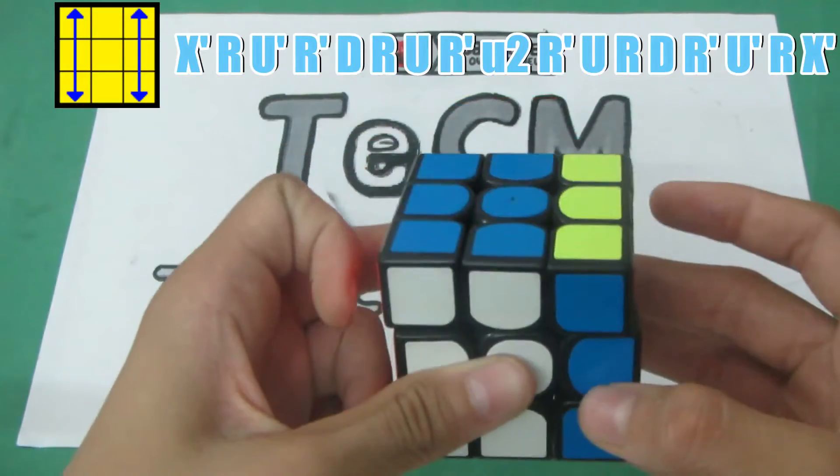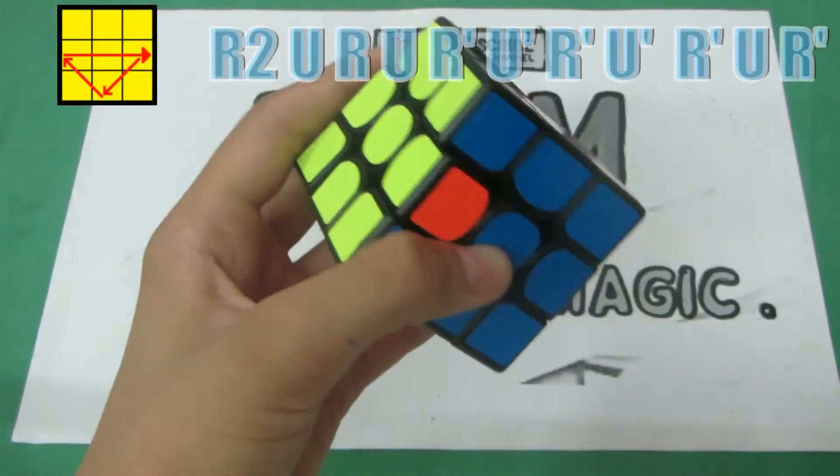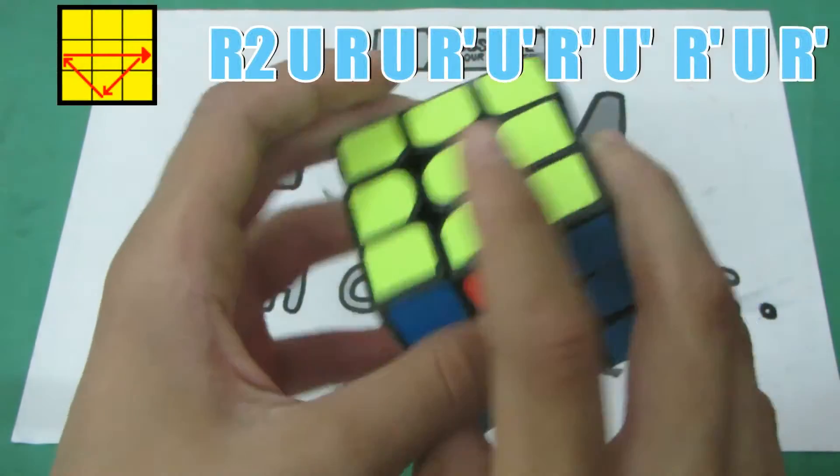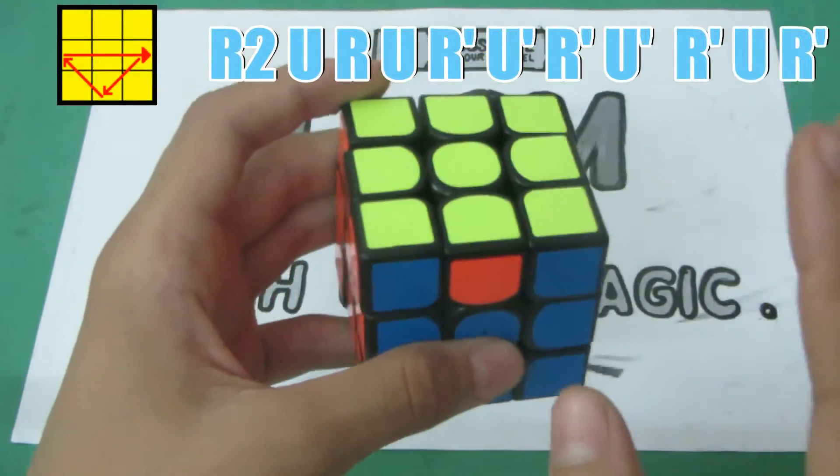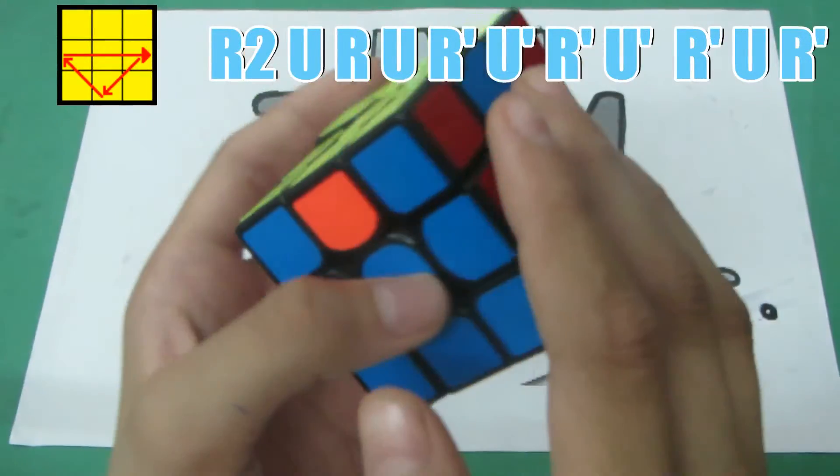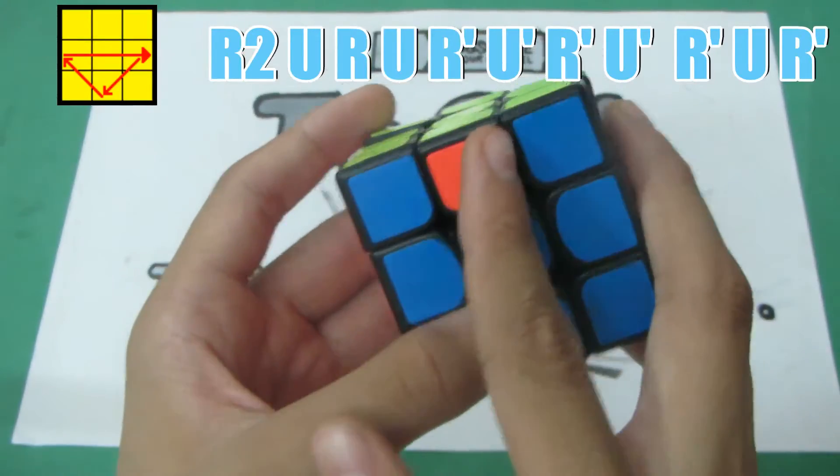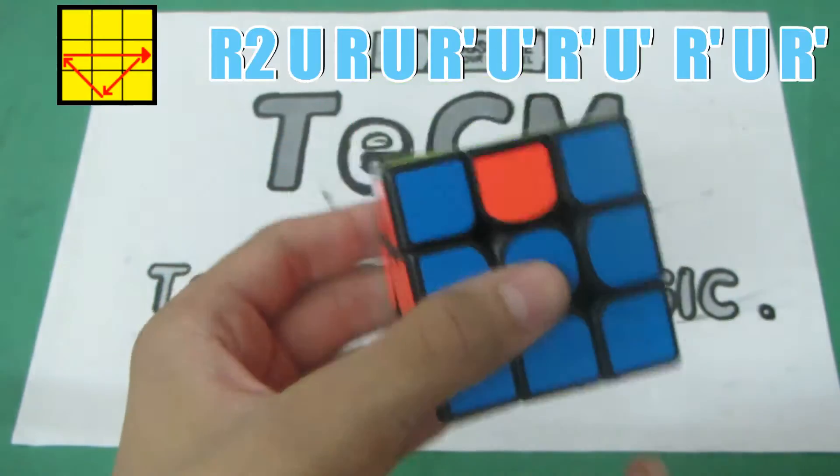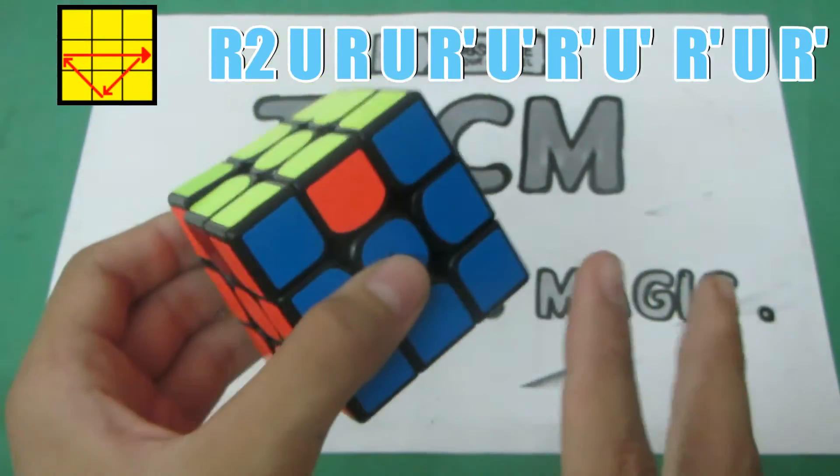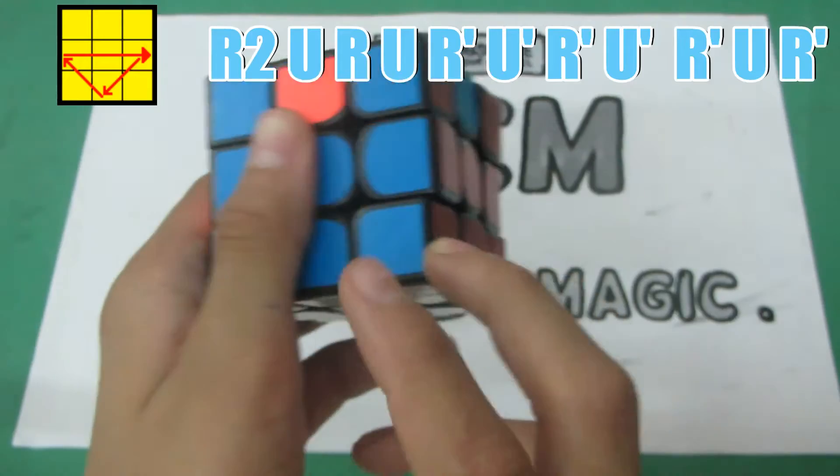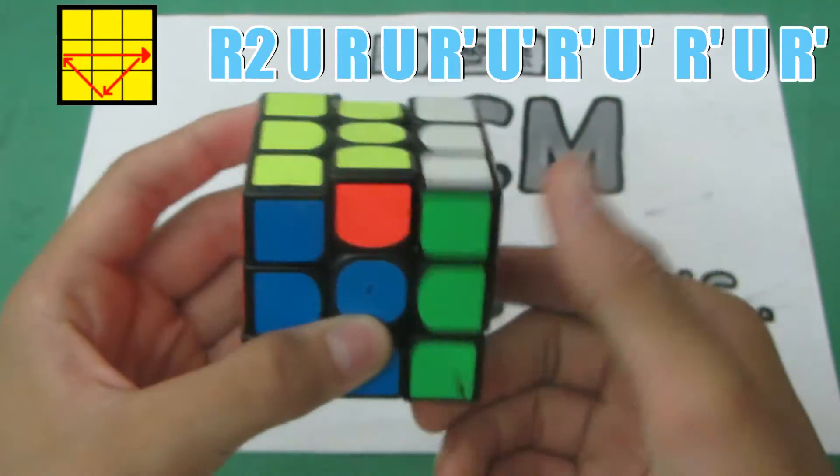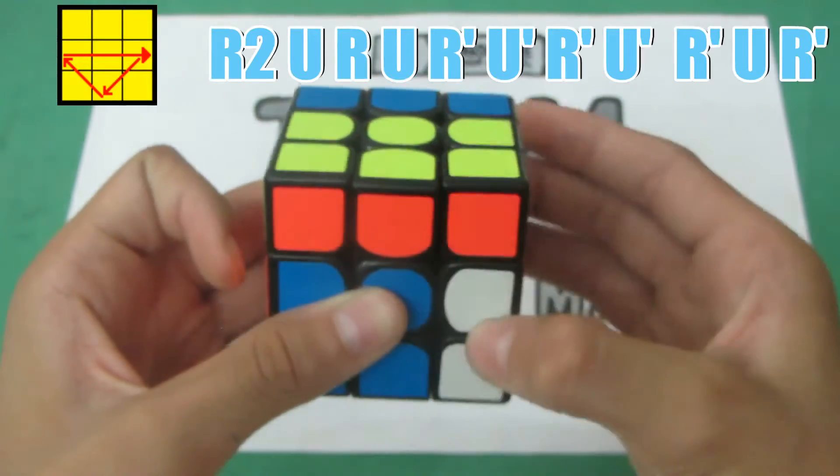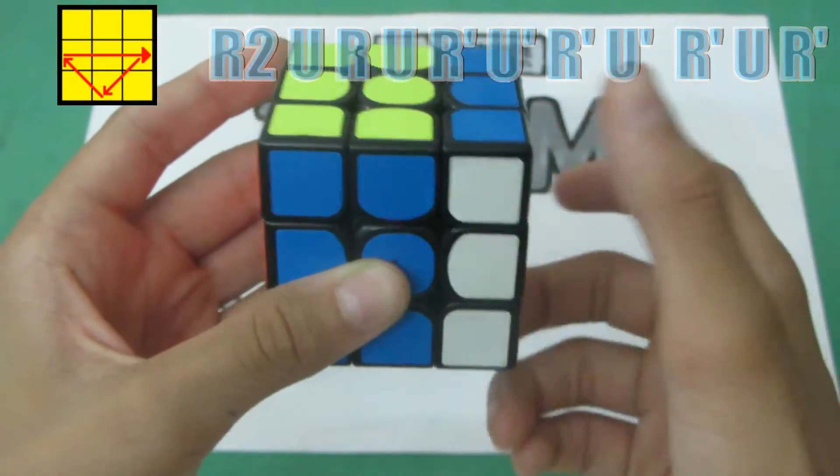Now the third algorithm is this one in which you need to swap the edges clockwise. That is you are swapping the edges clockwise. Like this one needs to come here, this one here and this one needs to go here. So it's an anti-clockwise edge rotation. And the algorithm is R2 U R U R' U' R' U' R'.